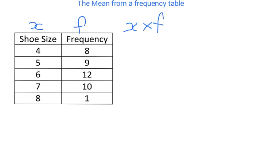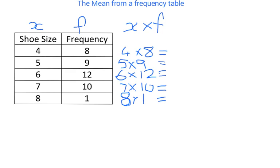Instead of adding four plus four eight times, we do four times eight. So we multiply each shoe size by its frequency. That gives us: 4×8 = 32, 5×9 = 45, 6×12 = 72, 7×10 = 70, and 8×1 = 8. This replicates what we would have done if we'd listed all the raw data.